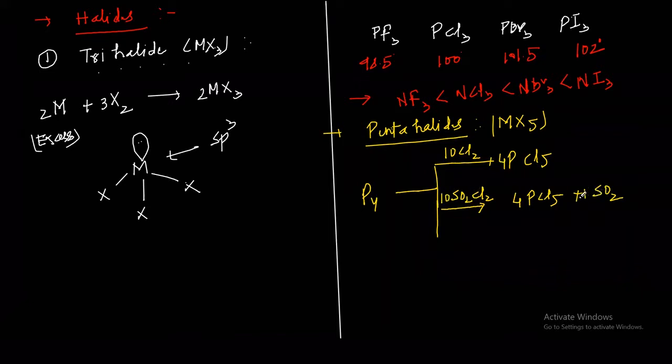Phosphorus reacts with chlorine in limited supply. First you get 4 PCl3 trichloride, and when it reacts again with Cl2, you get PCl5. So limited supply first gives trihalides and then pentahalides.